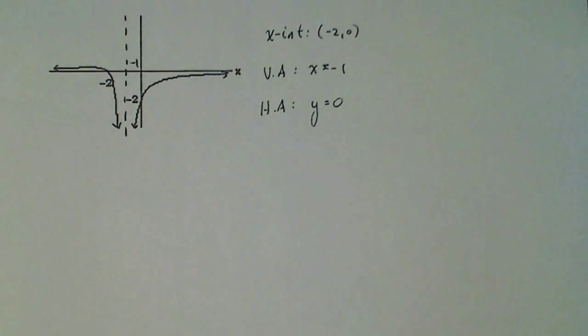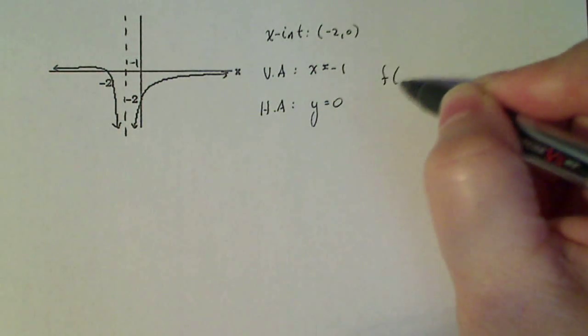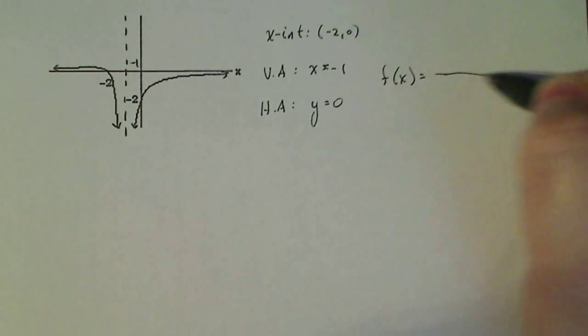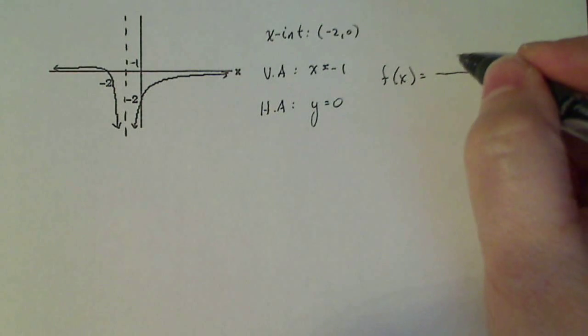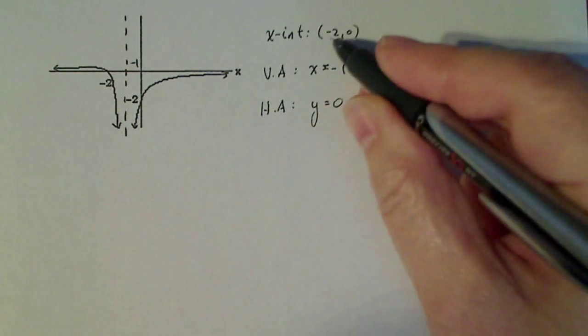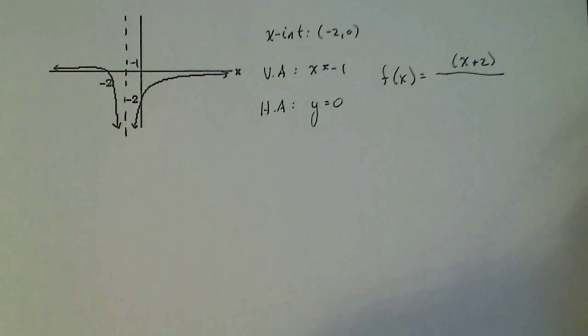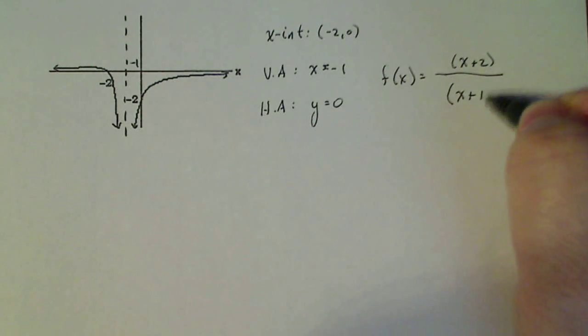So I'm going to just set up my equation just like normal. So my f of x is going to look like this. X-intercepts, of course, always occur in the numerator. So I have a factor of x plus two because when I plug minus two in here, I get zero, which is what I want. And in the denominator, I'm going to have x plus one because when I plug minus one in here, I get a zero, which is also what I want. That's what creates the asymptotes.